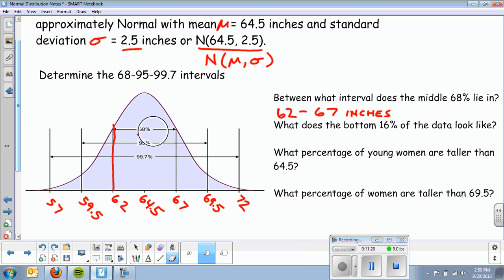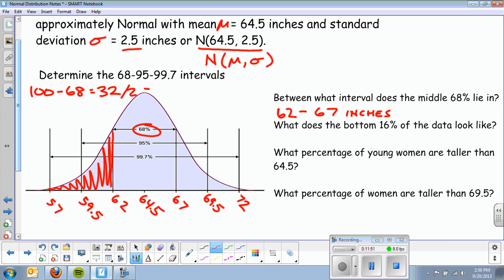Now we have 68-95-99.7 with those labels. We're going to answer some questions. What interval does the middle 68% lie in? From the rule, 68% applies one standard deviation away, so between 62 to 67 inches. So 68% of all girls aged 18 to 24 are between 62 inches tall and 67 inches tall, that's 5 foot 2 and 5 foot 7. What does the bottom 16% of the data look like? I know the bottom 16% is one standard deviation away. I got 68% in the middle, took 100 minus 68, that gave me 32% in each tail, cut that in half I got 16%, so this area right here is below 62 inches.